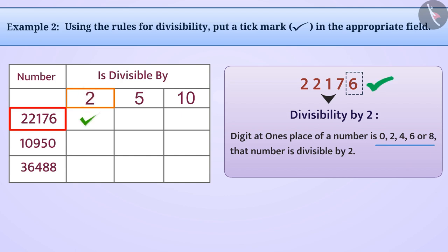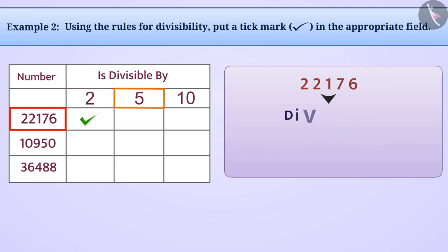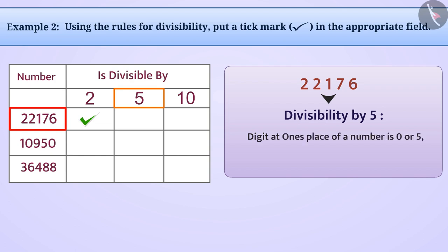For divisibility by five, the rule tells us that if the digit at the ones place is 0 or 5, then the number is divisible by five. Since the ones digit of this number is neither zero nor five, this number is not divisible by five.